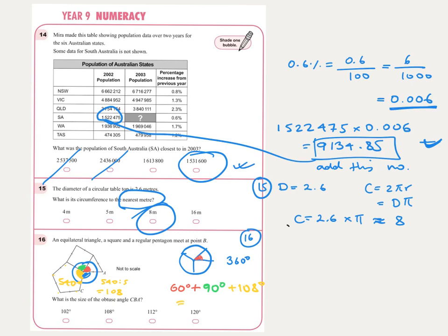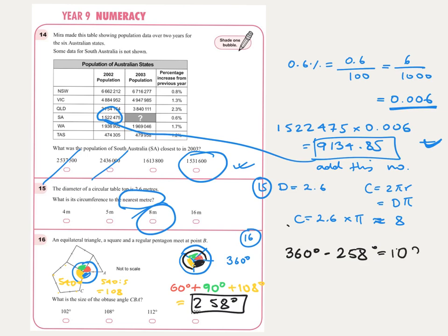Adding the known angles: 60 plus 90 plus 108 equals 258 degrees. Since all angles around the point sum to 360 degrees, the remaining angle CBA equals 360 minus 258, which is 102 degrees. That is the correct answer for angle CBA — the first option.